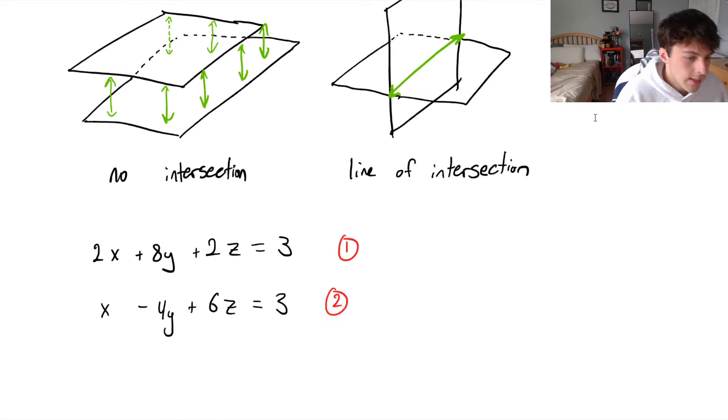This will be a second equation of a plane. And again, this is clearly in R3. We've got three variables here. Our dimensions in R3 are x, y, and z.